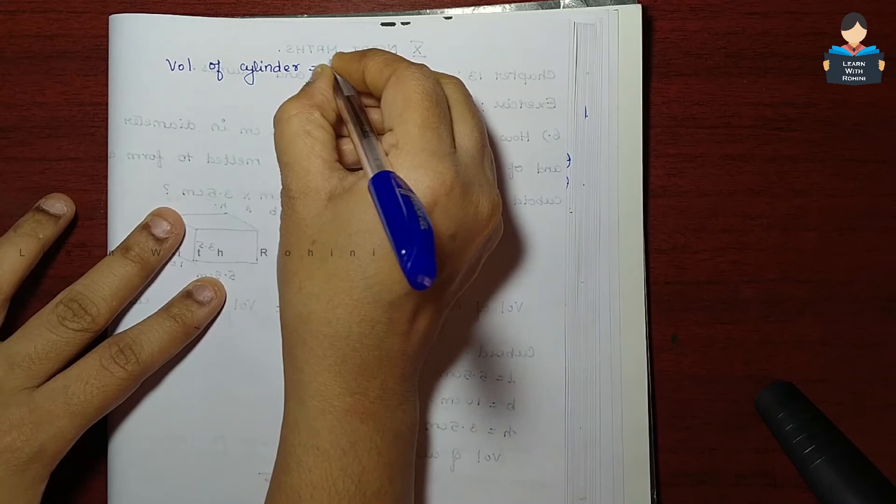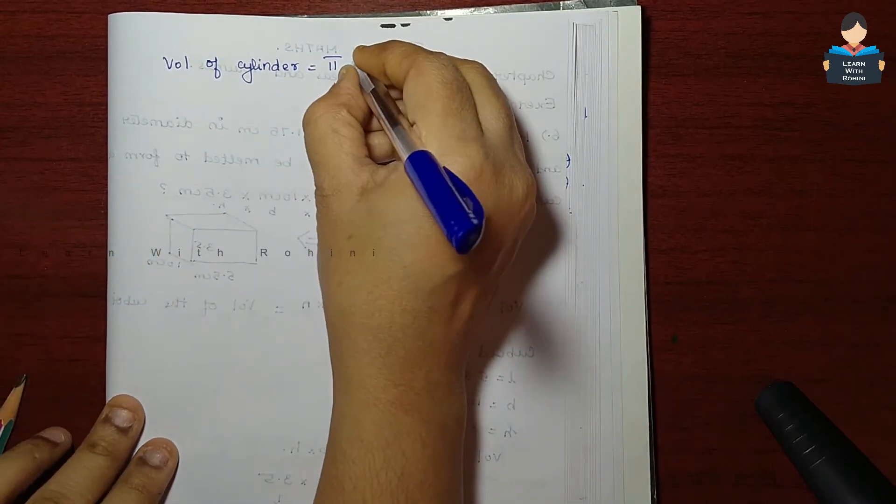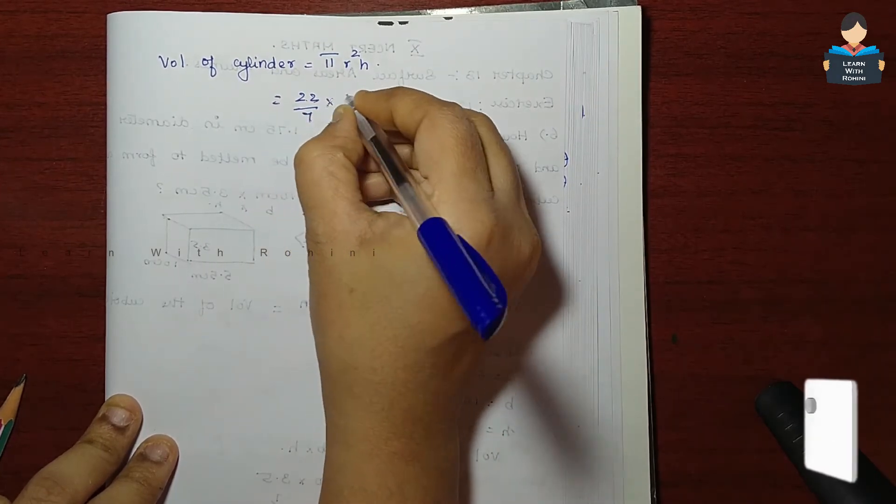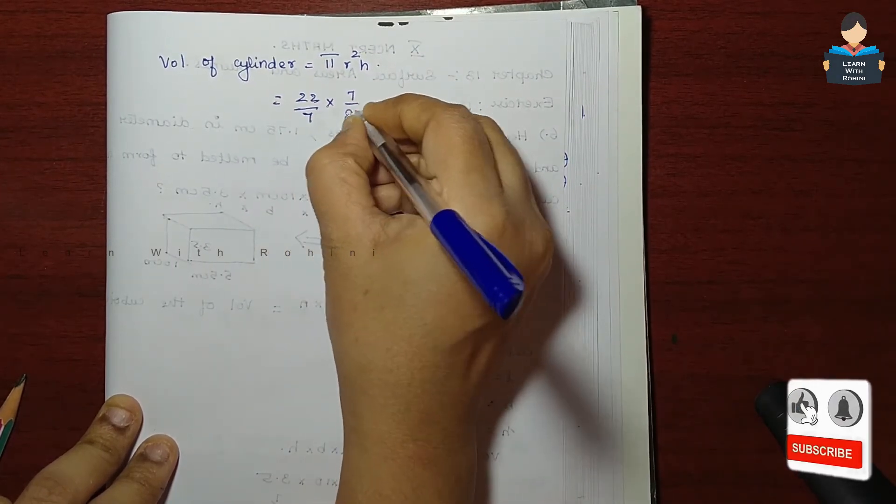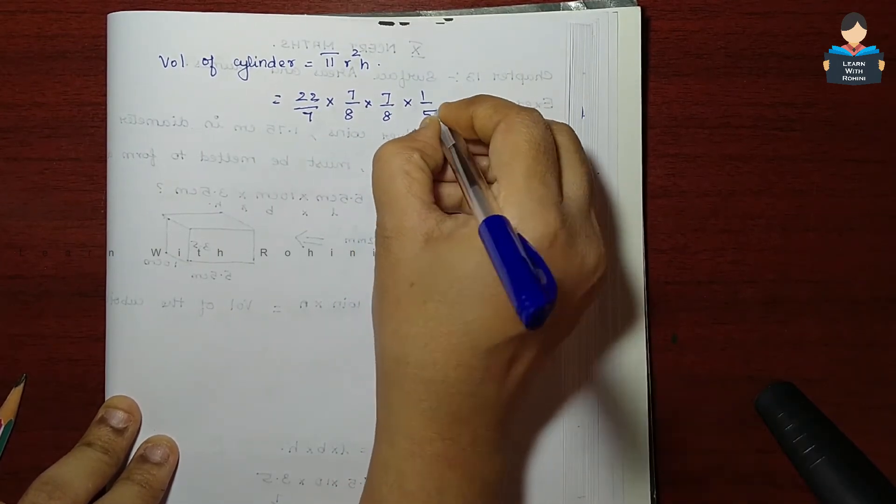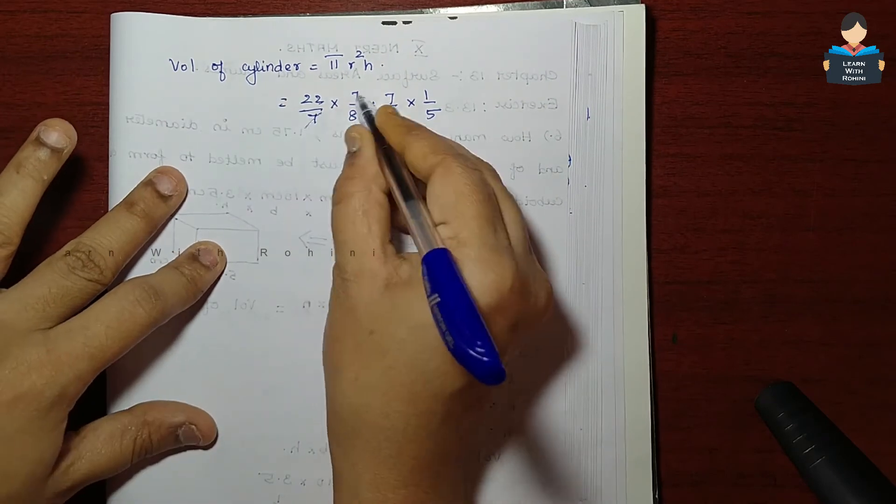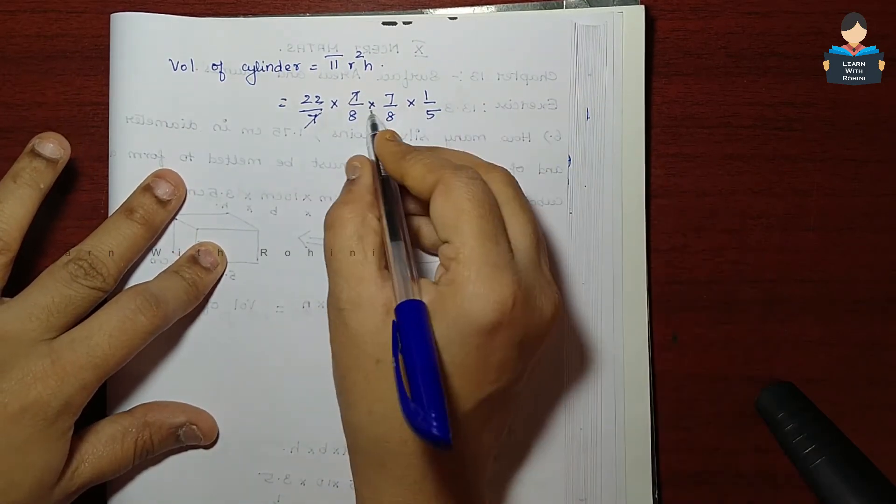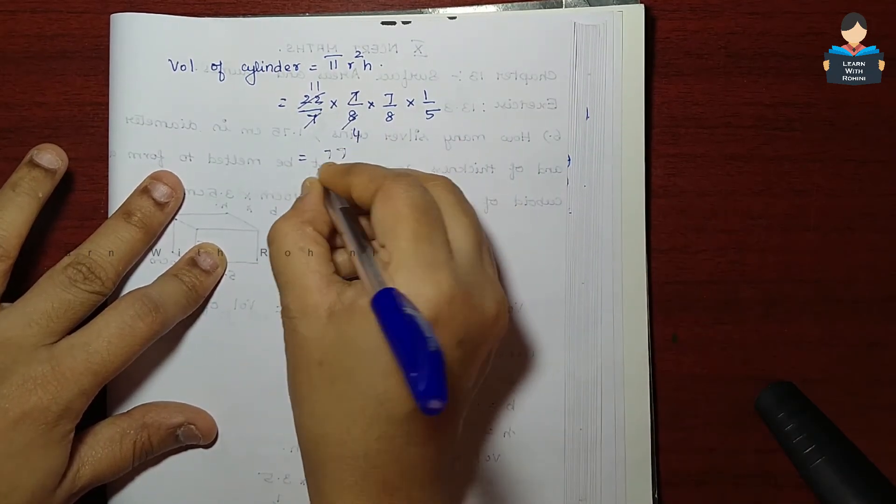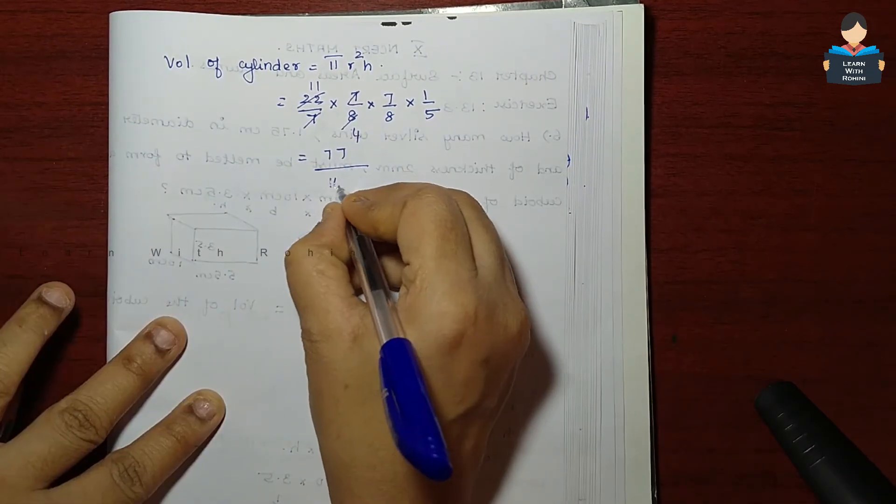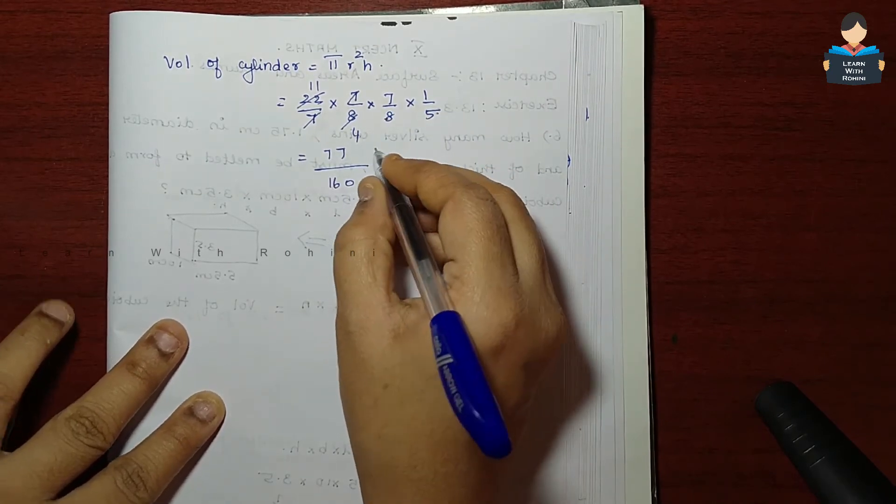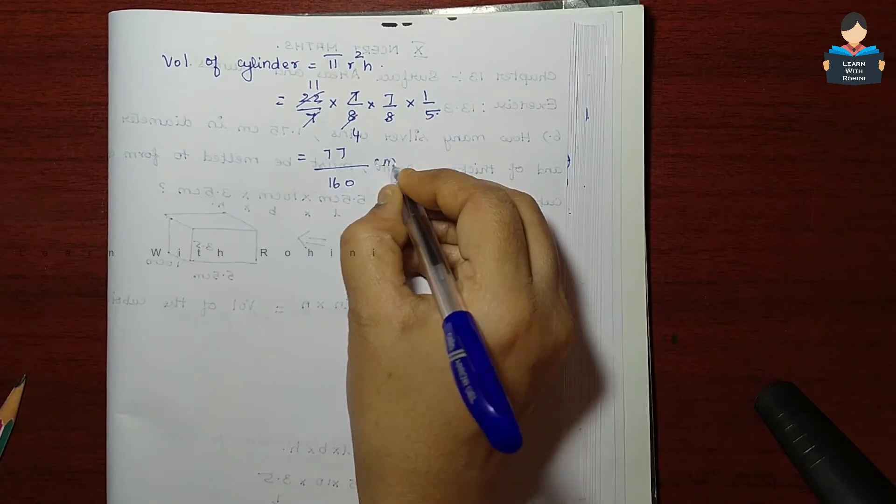Volume of cylinder equal to pi r square h equal to 22 by 7 into 7 by 8 into 7 by 8 into 1 by 5. The 7s cancel. So 77 by 160, 5 eights are 40, 40 into 4 which is 160 centimeter cube.